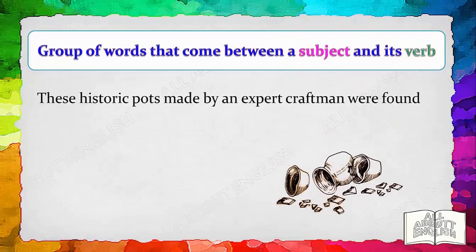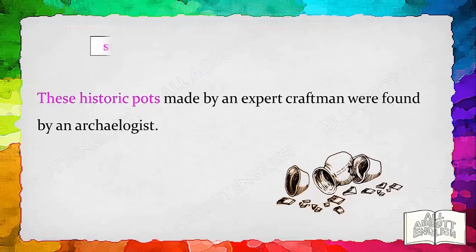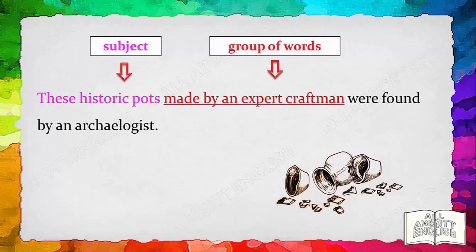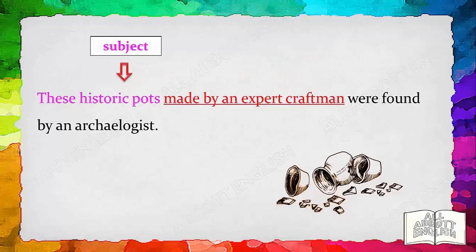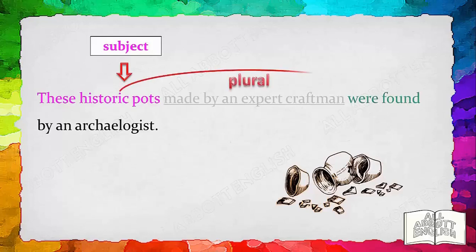These historic pots, made by an expert craftsman, were found by an archaeologist. 'These historic pots' is the subject; it is in the plural form, so we need to look for its plural verb. 'Made by an expert craftsman' are words that describe the subject. By mentally removing this group of extra words, it is easier to match the subject with its verb. 'These historic pots' is a plural subject; therefore, it takes the plural verb 'were found.'